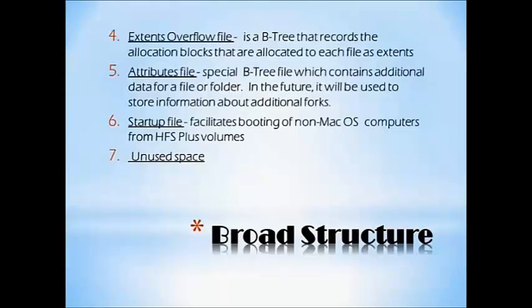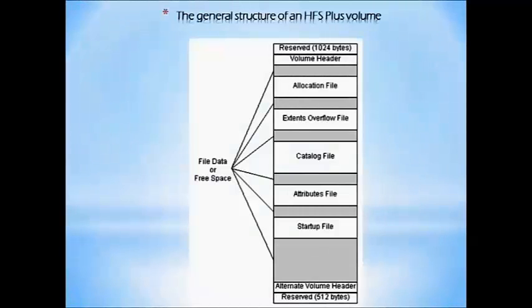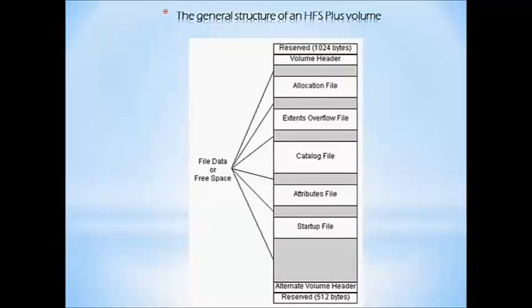Fifth is the Attributes File, a special B-tree file which contains additional data per file or folder, and in the future will be used to store information about additional quotas. Sixth is the Startup File, which facilitates booting of non-macOS computers from HFS Plus volumes. Seventh is unused files. The general structure of an HFS Plus volume shows: 1024 bytes for the volume header, then the allocation table, Extents Overflow File, Catalog File, Attributes File, Startup File, and finally the alternate volume header with 512 bytes reserved. The grey area in between is used file data space.